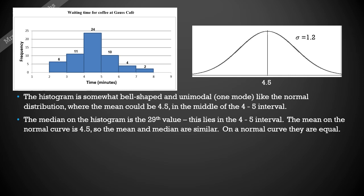The mean on the normal curve is 4.5, so the mean and the median are very similar. If that median lies between 4 and 5, it will be close to that mean of 4.5. On a normal curve the mean and the median are equal, so that does match up with the properties of a normal curve.